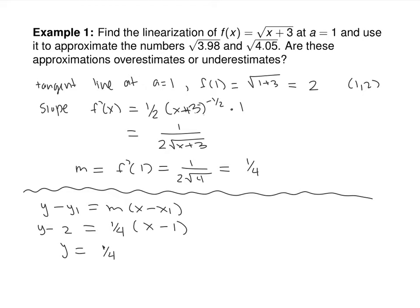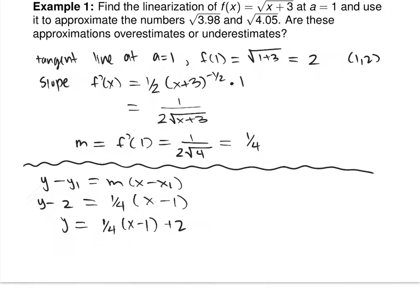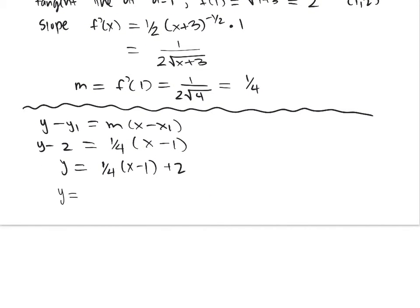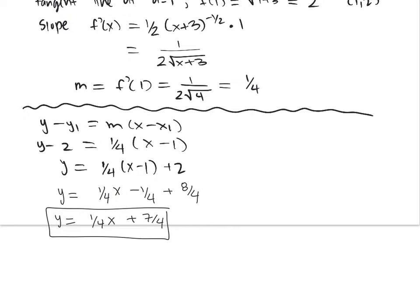Now find the tangent line using point-slope form: y minus y1 equals m times (x minus x1). For the linearization, you have to get y by itself and put it in slope-intercept form: y minus 2 equals one-quarter times (x minus 1), giving y equals one-quarter x minus one-quarter plus eight-quarters, so y equals one-quarter x plus seven-quarters. That's the linearization. So root(x + 3) is approximately equal to one-quarter x plus seven-quarters for x close to 1.